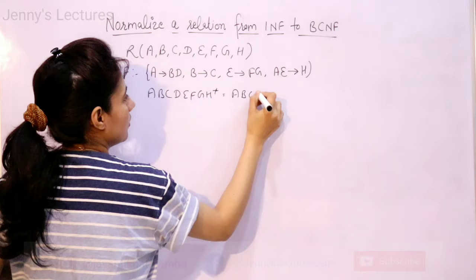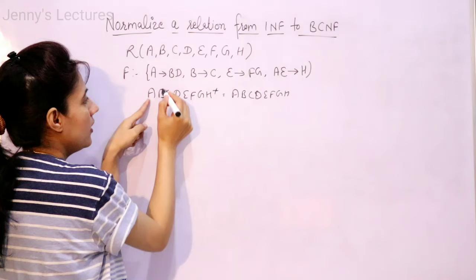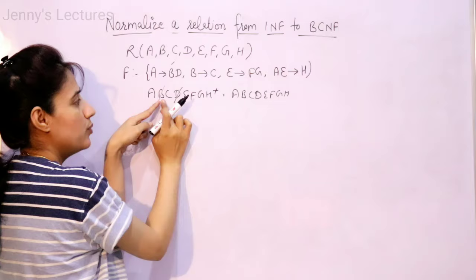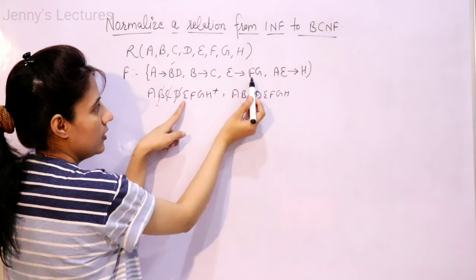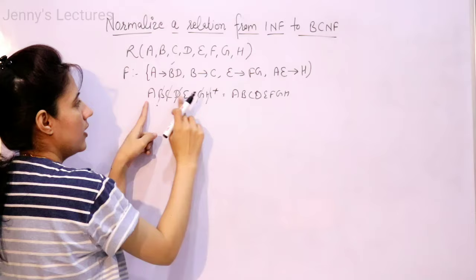Obviously, the closure will find out all the attributes. Now try to discard the attributes using functional dependencies. A can drive B and D, so if you have A, I can discard B and D. B can drive C, so if you have A and then B, I can drive C — so I can discard C as well. Using E, I can drive F and G, so you can discard F and G. If you have A and E, you can drive H, so you can discard H. The remaining attributes are only A and E.